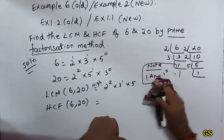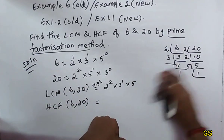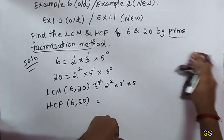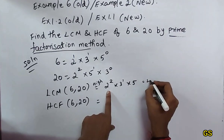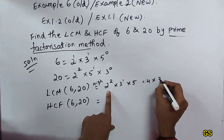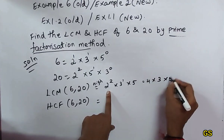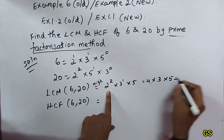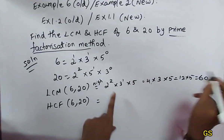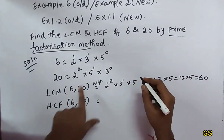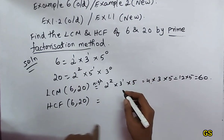Multiplying these together: 2 squared is 4, multiplied by 3 is 12, multiplied by 5 is 60. So LCM of 6 and 20 is 60.